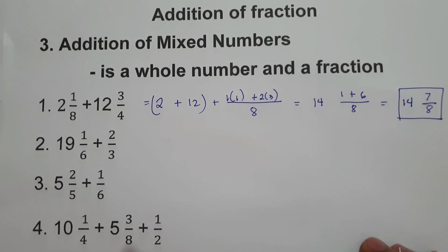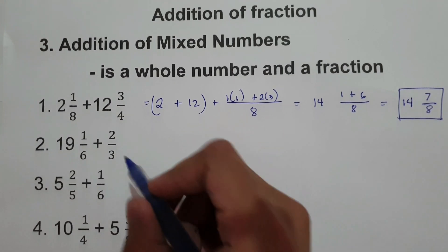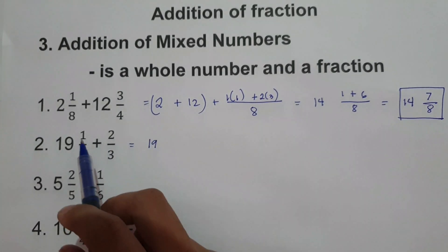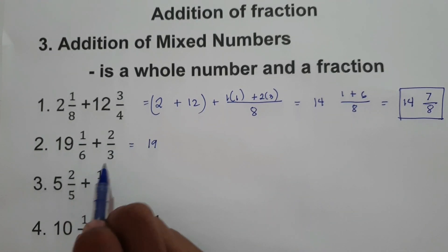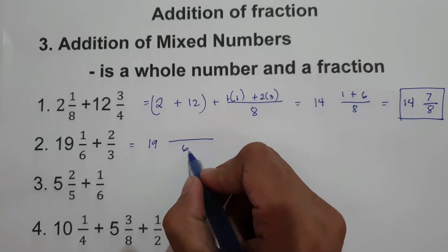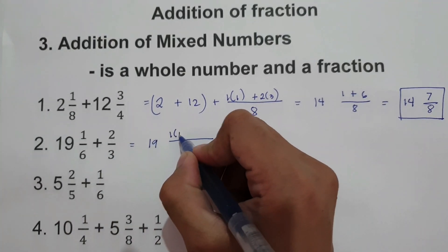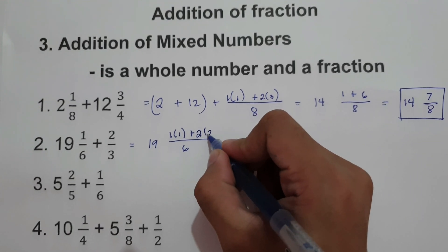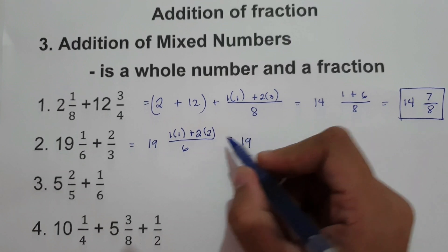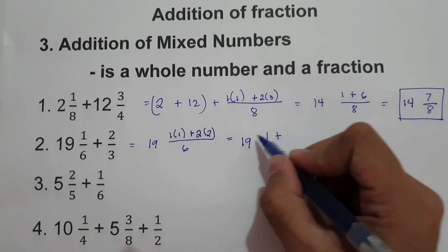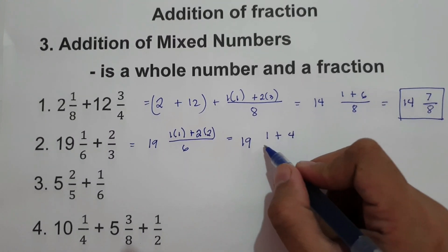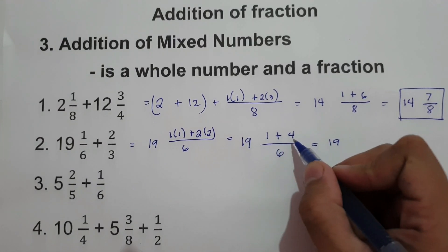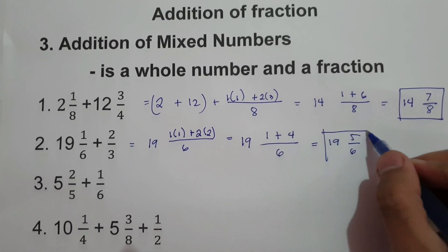Number 2: 19 and 1 over 6 plus 2 third. We simply copy the whole number 19 and then add 1 over 6 and 2 third. The least common multiple of 6 and 3 is 6. 6 divided by 6 is 1, multiplied by 1; plus 6 divided by 3 is 2, times 2. Writing 19: 1 times 1 is 1, plus 2 times 2 is 4, over 6. So we have 19 and 1 plus 4, that is 5 over 6. This will be our answer.